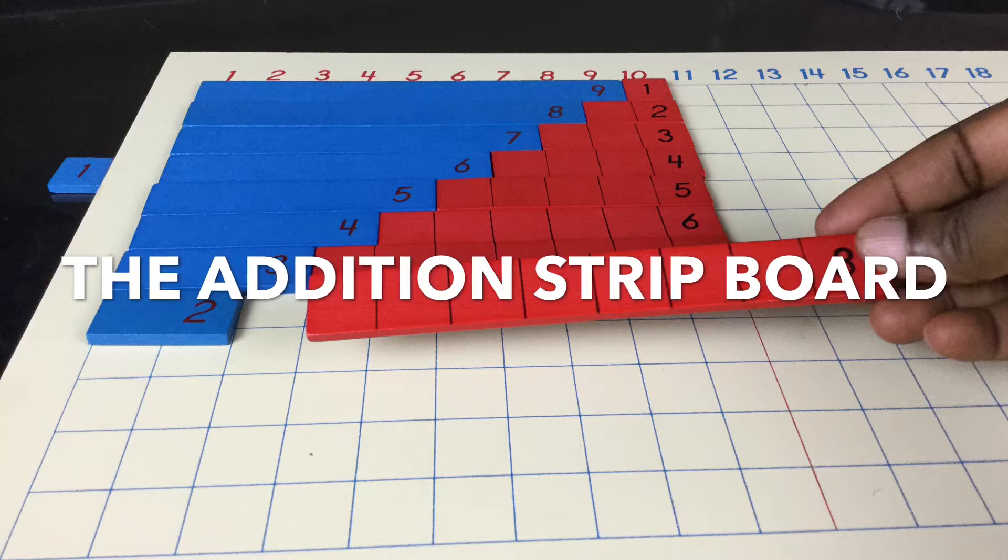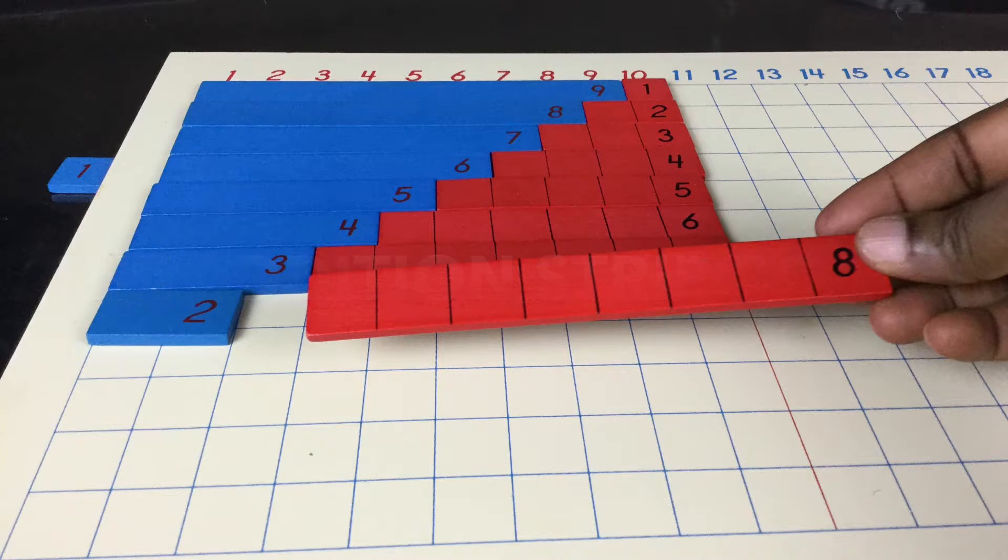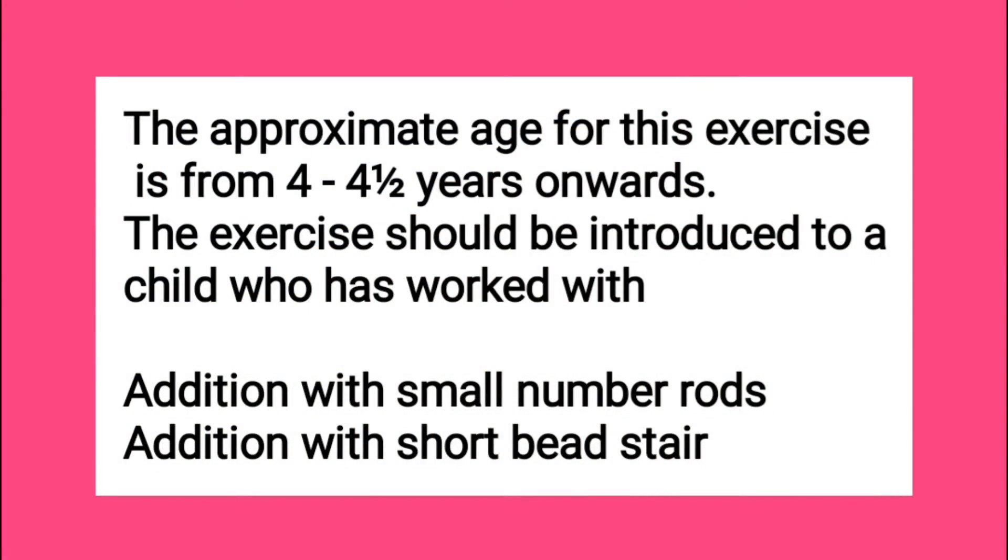The addition strip board. The approximate age for this exercise is from four to four and a half years onwards. The exercise should be introduced to a child who has worked with addition with small number rods and addition with short bead stair.